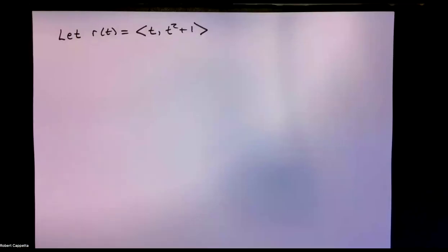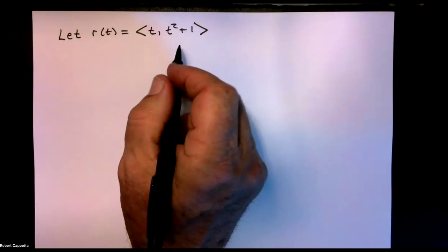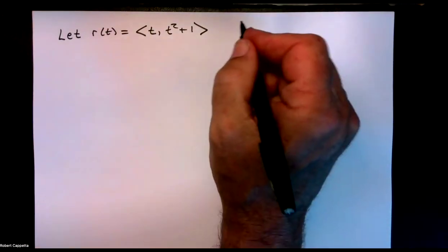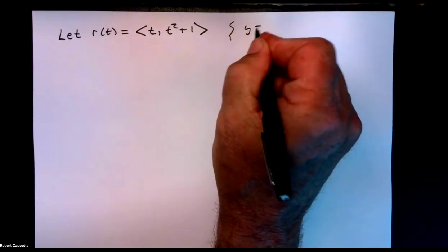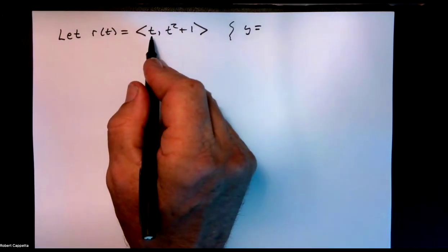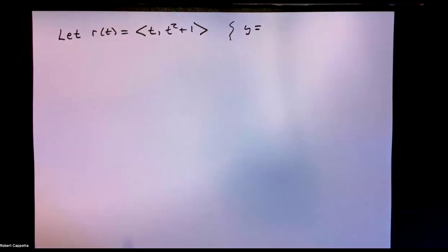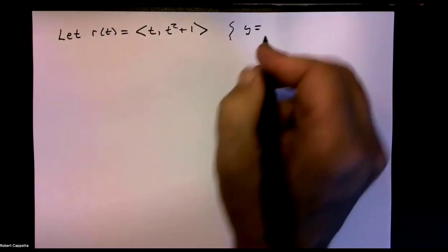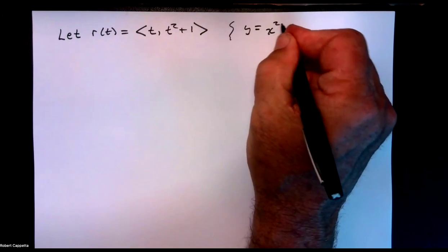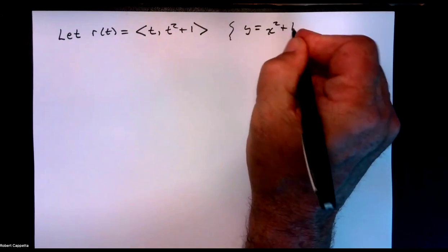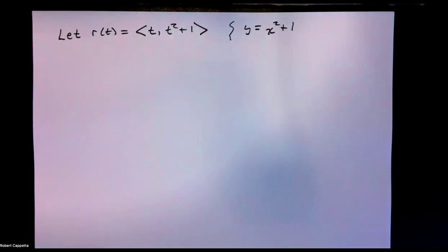We have this vector-valued function r(t) = ⟨t, t²+1⟩. Notice that the y value is the x value squared plus 1. So in essence, this graph should be the same as the graph of y equals x squared plus 1. Let's take a quick look at that to see if that's the case.